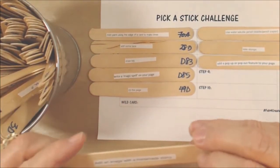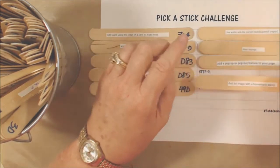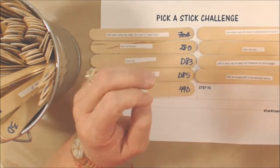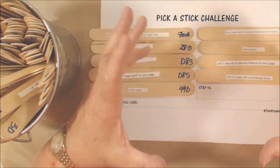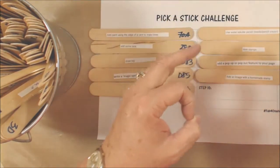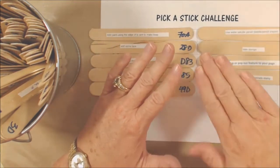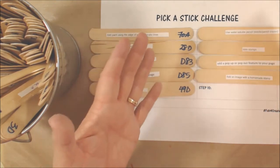All right, step nine, add an image with a homemade stamp. That could be anything. If you carve stamps, if you have mark-making tools that you use as stamps. You guys have seen my little stash of stuff that's got like the insides of rolls of tape and bubble wrap and different things like that. If you're using it to stamp either with ink or paint to make an image, then that's a homemade stamp.